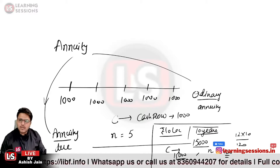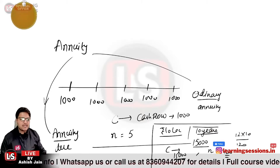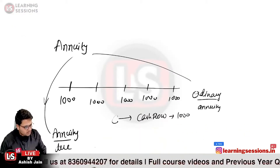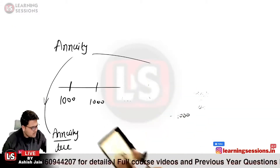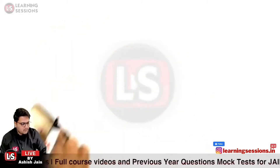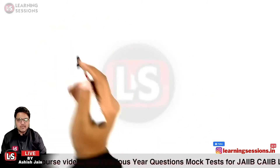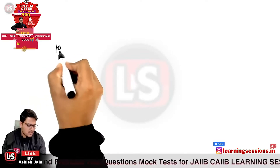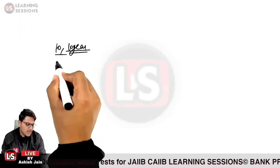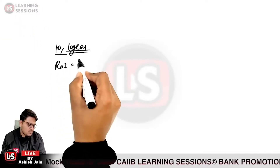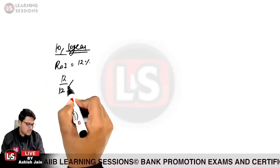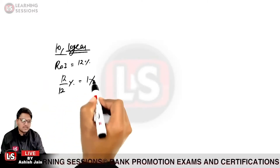If the interest rate of 12% is applicable, what would be the monthly interest rate? The monthly interest rate would be 12 divided by 12 percent, which equals 1% per month.